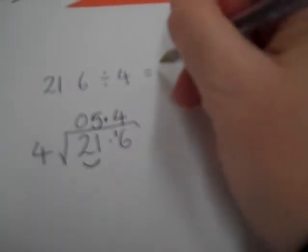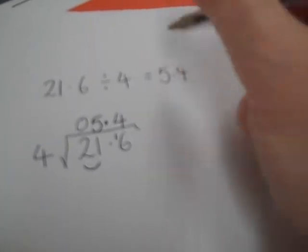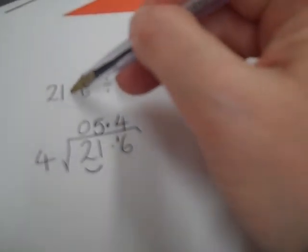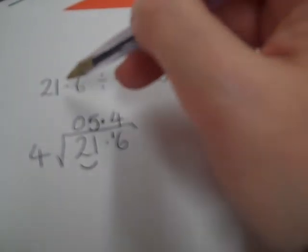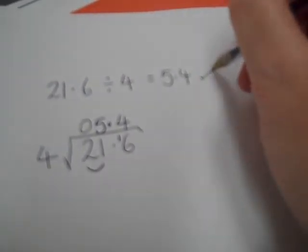And that's it. Make sure it makes sense. 21.6 divided by 4. Well, I know that there are 5 4s in 20, so it's going to be slightly more than 5.